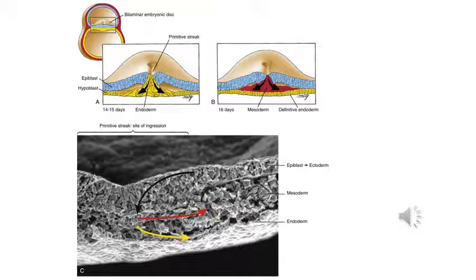The mesoderm is the middle layer and it eventually gives rise to the somites, which become the axial skeleton and the skeletal muscle of the neck, body wall, and limbs. It gives rise to the heart and circulatory system, the urinary system, and part of the genital system, and it gives rise to the connective tissue of the body wall and limbs.